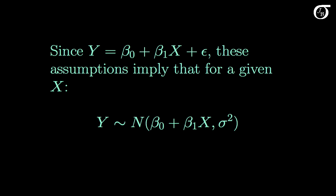Since y equals beta0 plus beta1x plus epsilon, these assumptions imply that for a given value of x, y is distributed normally with a mean of beta0 plus beta1 times x and a variance of sigma squared.